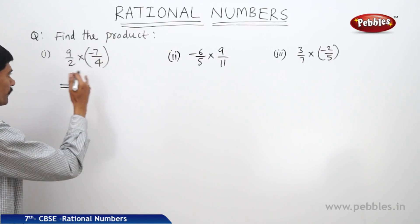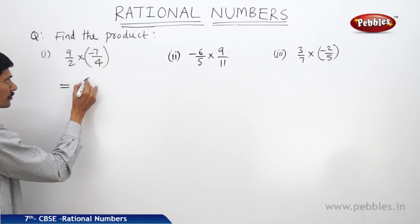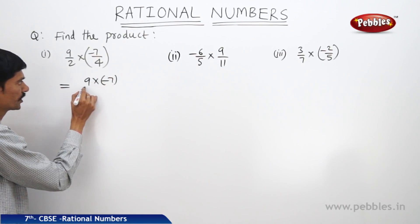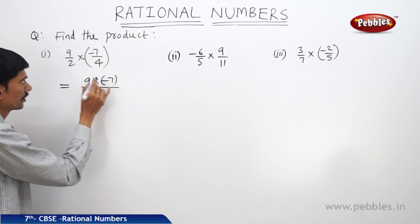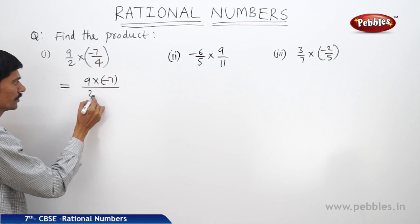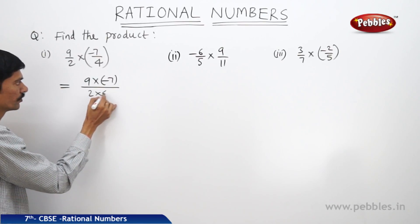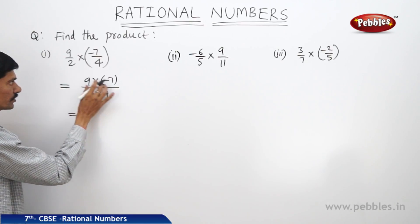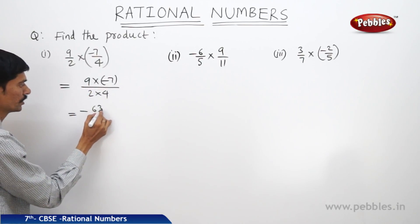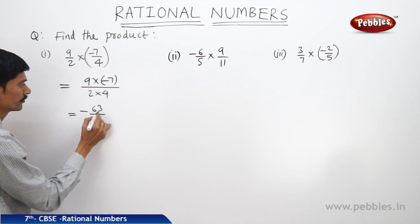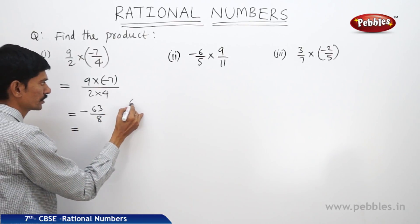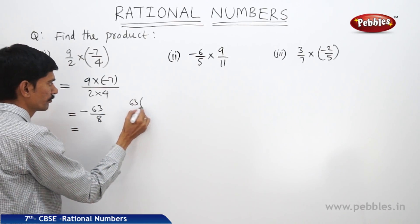Find the product of the numerators: 9 into minus 7, divided by the product of the denominators 2 and 4, meaning 2 into 4. This equals minus 63 by 8, since plus into minus is minus, 9 sevens are 63, and 2 fours are 8. Now we divide 63 by 8.